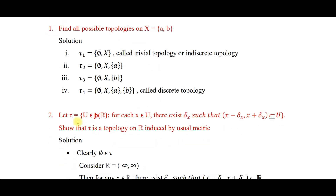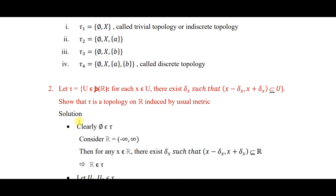Second question: let τ be the set of all U in the power set of ℝ such that for each x in U there exists δ > 0 such that the open interval (x−δ, x+δ) ⊆ U. Show that τ is a topology on ℝ induced by the usual metric. We consider the three conditions. Clearly, the empty set belongs to τ. Now consider the whole line ℝ = (−∞, +∞): for any x ∈ ℝ there exists δ such that (x−δ, x+δ) ⊆ ℝ.